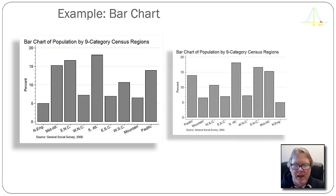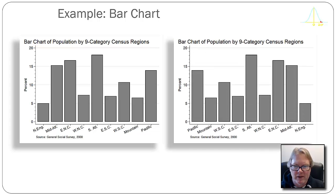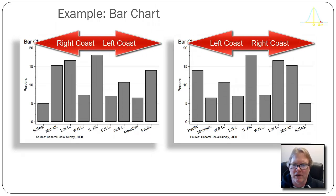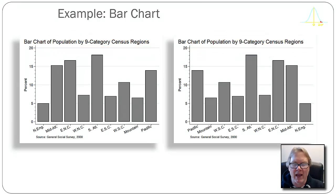For example, here I've reversed the order of the bars, and this may make more sense because it's roughly equivalent to looking at a map of the United States going from the west coast to the east coast, from the Pacific to New England. And therefore, it kind of corresponds to a built-in view we have of the United States when we look at a north-up version of a North American map.